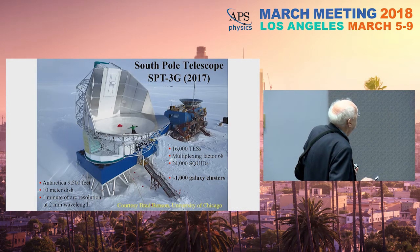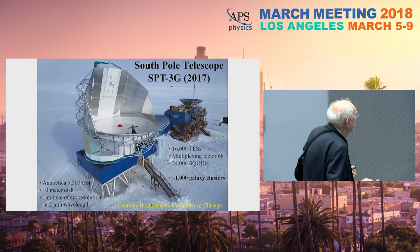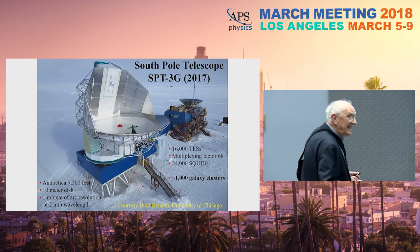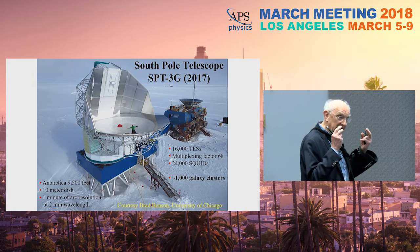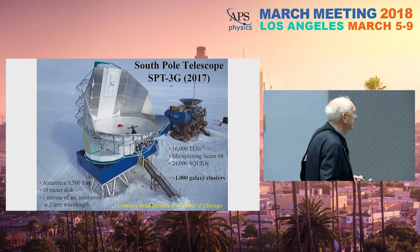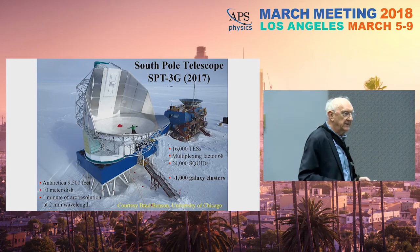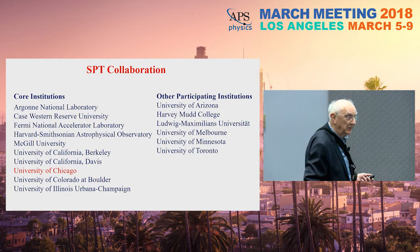The South Pole Telescope is located in Antarctica at 9,500 feet and has a 10-meter dish. All incoming cosmic background radiation is focused into the detection column. In the current version there are 16,000 TESs, the multiplexing factor is now 68, and the total number of SQUIDs is about 24,000. So far, roughly 1,000 galaxy clusters have been discovered with this technique. More are needed, but these are ongoing experiments involving a large collaboration over many years.